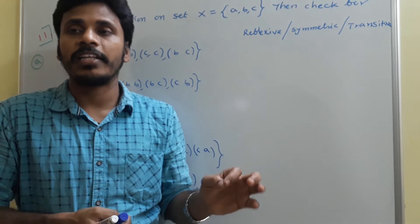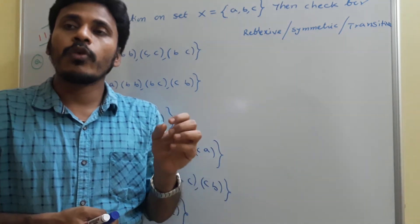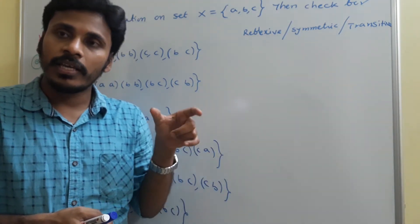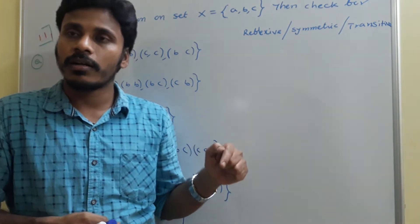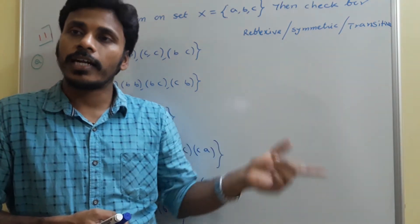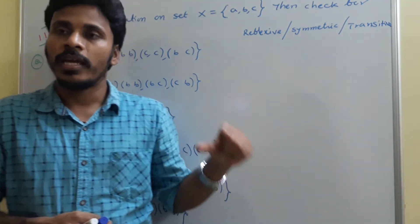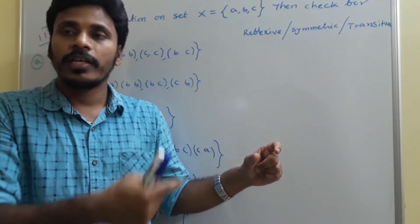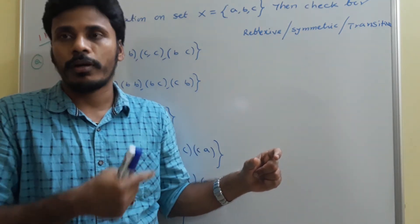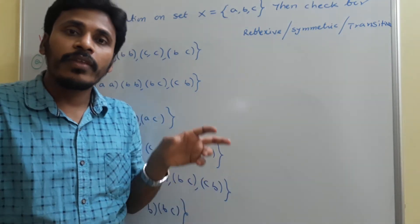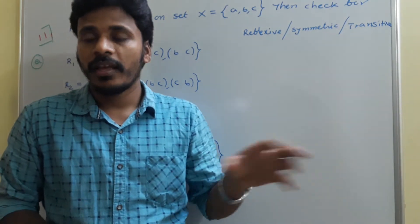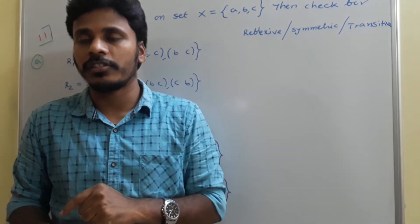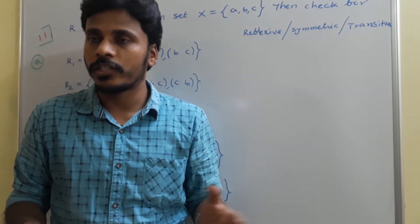Coming to transitive relation: suppose you have two ordered pairs (x, y) and (y, z), where the second element of the first ordered pair and the first element of the second ordered pair are both y. Then the property must transfer from x to z. Since the rule is transferring, we call it transitive. If we have (x, y) and (y, z), we need to search for (x, z). If (x, z) is also in the relation, it is transitive; otherwise, not transitive.